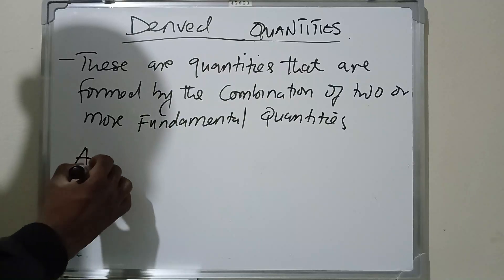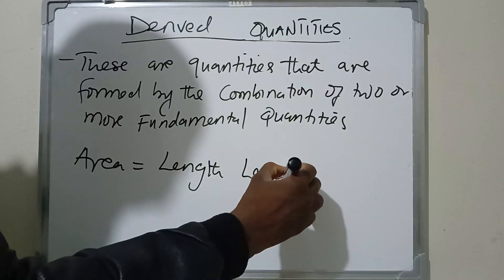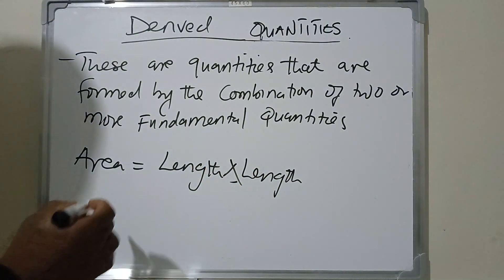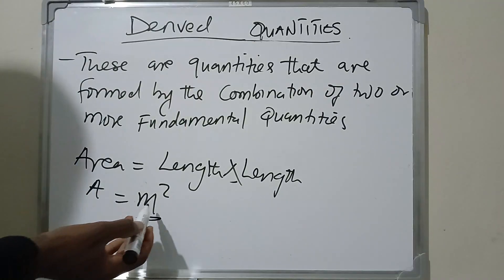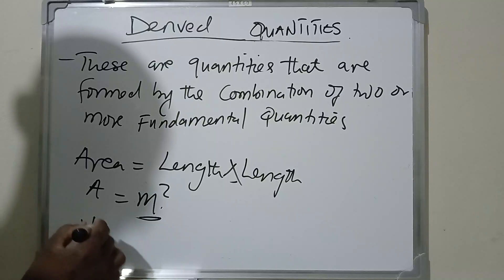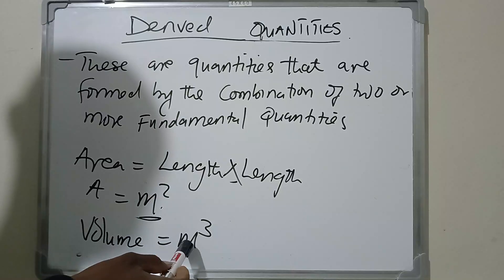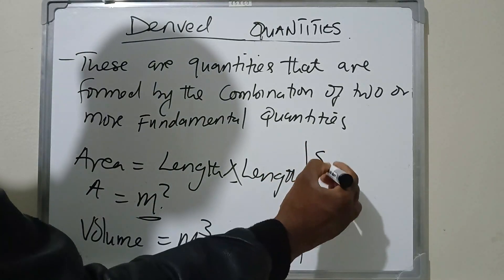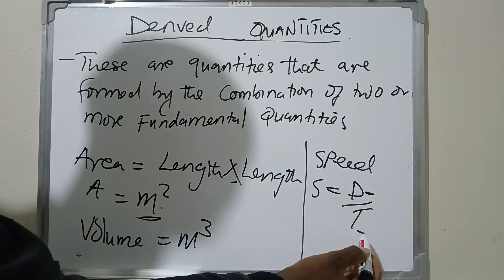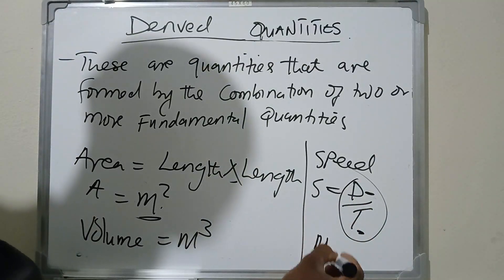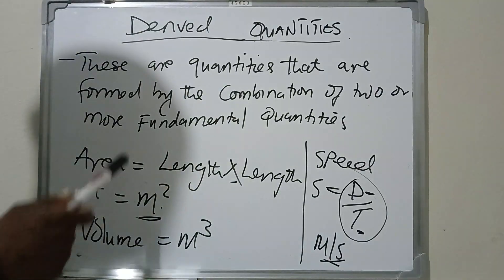For example, if we have area, you need to combine length and length — that combination is by multiplication. That's why area is equal to M squared, which shows you that you are multiplying length by length. Volume is cubic meters, meaning length times length times length. Another example is speed: speed equals distance over time. You need distance, which is length, and you also need time. The unit is meters per second. So derived quantities need more than one fundamental quantity.